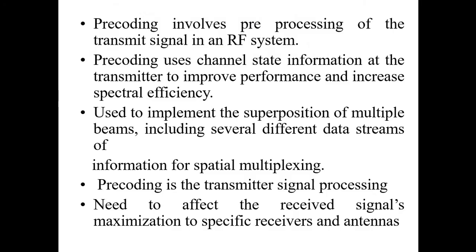The major part with pre-coding is that we have a method to pre-process the data, and with the help of the RF system — radio frequency system — we would like to transmit the signal from one place to another. Normally, while transferring data we keep a transmitter at one end and a receiver at another end, and based on the propagation channel there can be some changes. But with pre-coding, it uses the channel state information at the transmitter to improve the performance and increase the spectral efficiency.